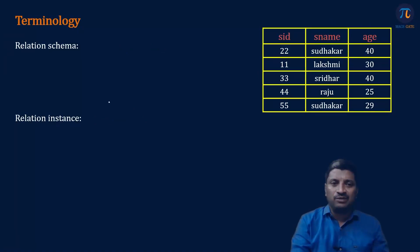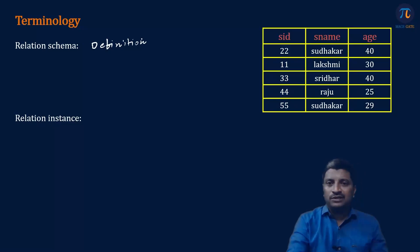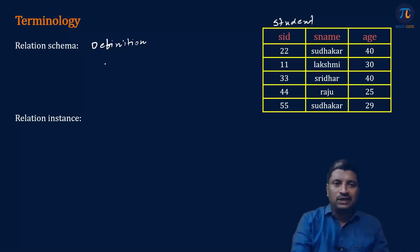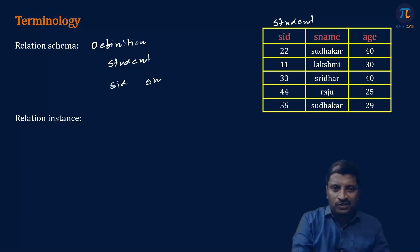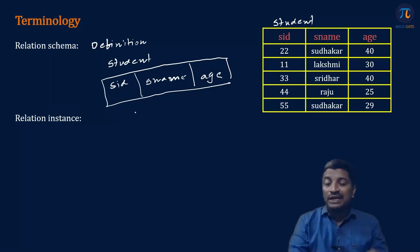The next one is relation schema. What is relation schema? The definition of a relation is called relation schema. What is meant by the definition of a relation? Suppose the name of this relation is student. In relation schema, we mention the name of the relation along with the names of the attributes — SID, SNAME, age. In relation schema, we don't consider the data or the records of the relation.